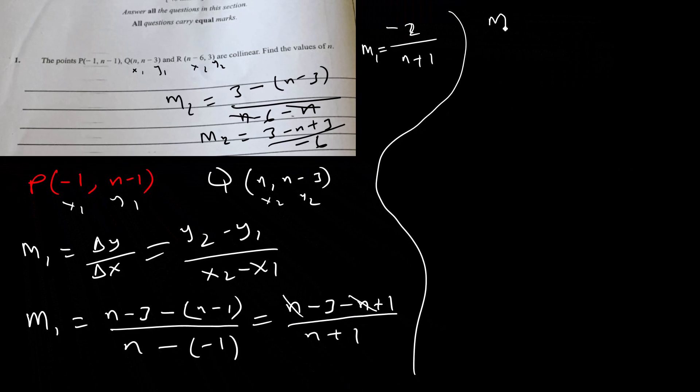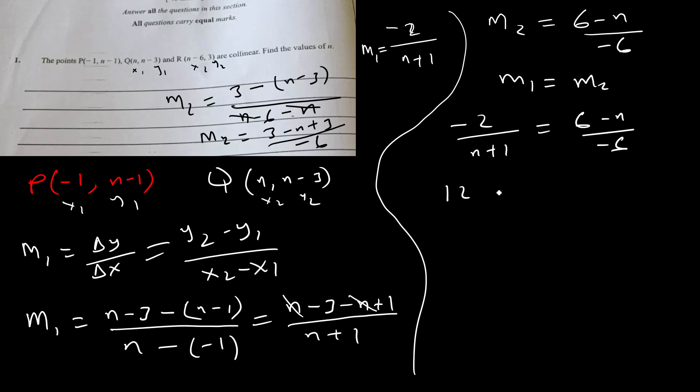Now for collinear points, m1 must equal m2. So -2 over n + 1 equals 6 - n over -6. Cross multiplying, we have 12 equals (n + 1) times (6 - n). So this is a quadratic.